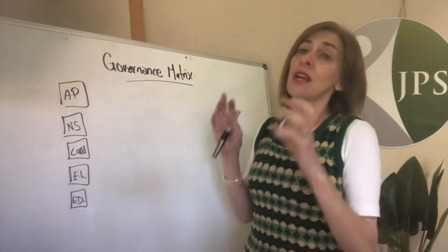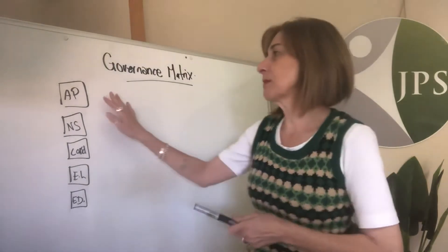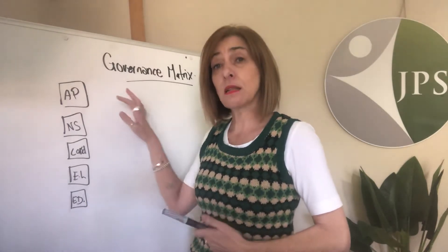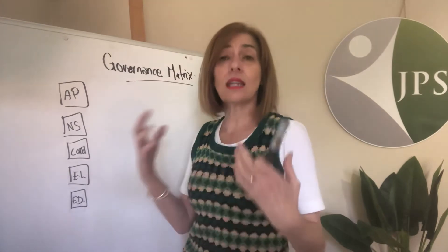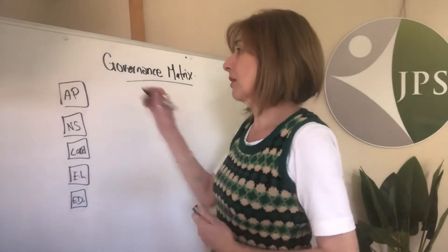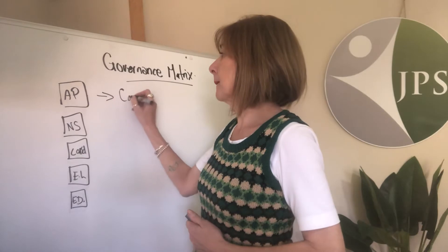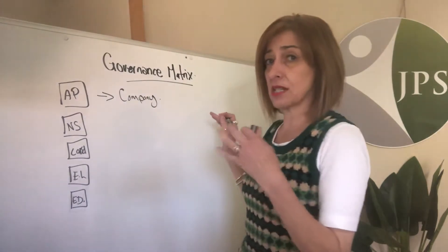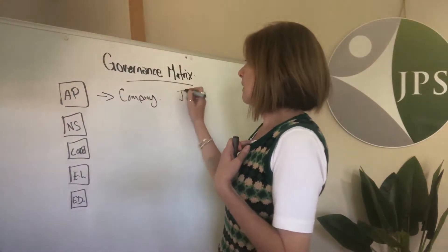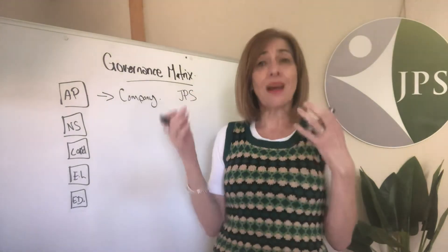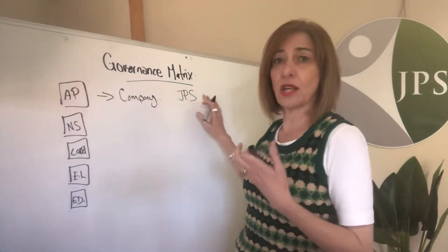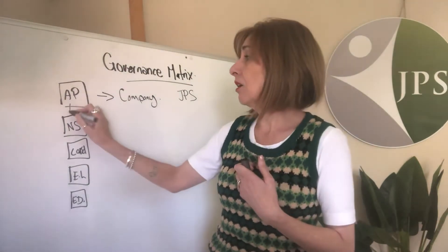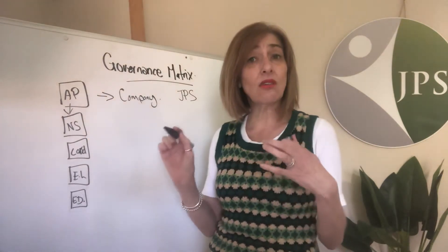Your governance structure — who is who, so to speak. Your approved provider under the legislation is the person that holds the entire responsibility to make sure that the service operates in accordance with the legislation. That could be a company or an individual. In my context, that would be JPS — the company holds the liability to make sure the education and care legislation is met at all times.